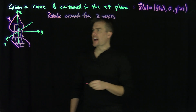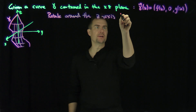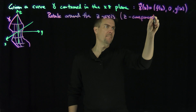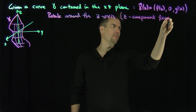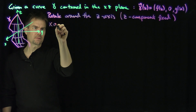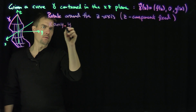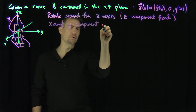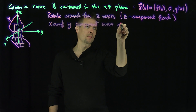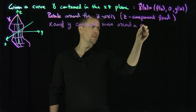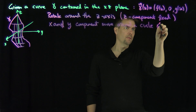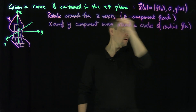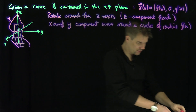When we rotate around the z-axis, the z-component is going to be fixed — your z-component is fixed. Then the x and y-components move around the circle of radius f(u). That gives us our parametrization of the surface.